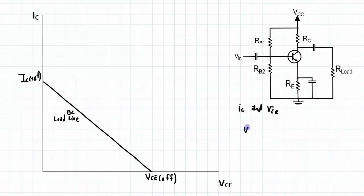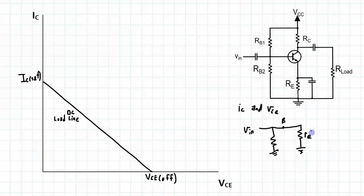So we will have a VIN that gets applied to some kind of input impedance and then it comes into the transistor. In the transistor we have the base here, and the emitter here with a little re value in the emitter,